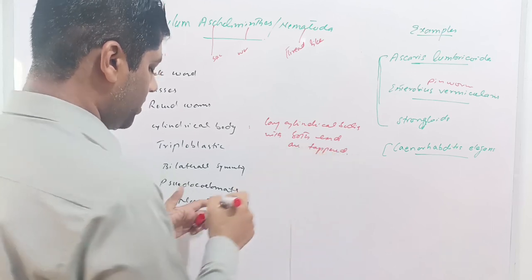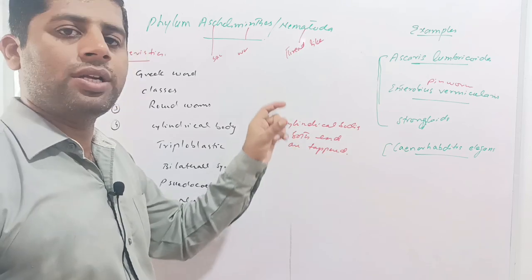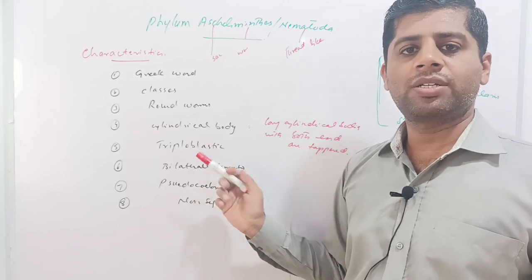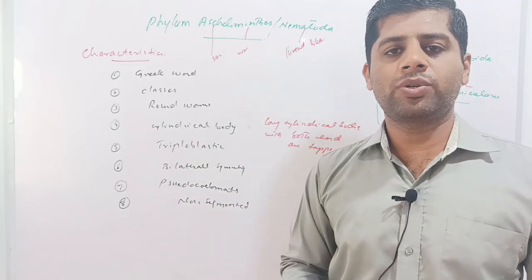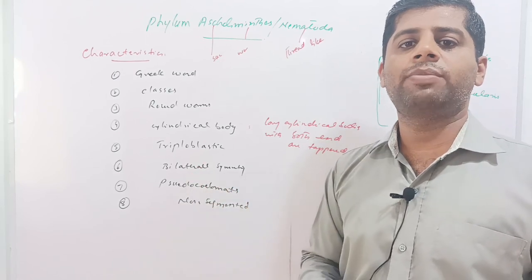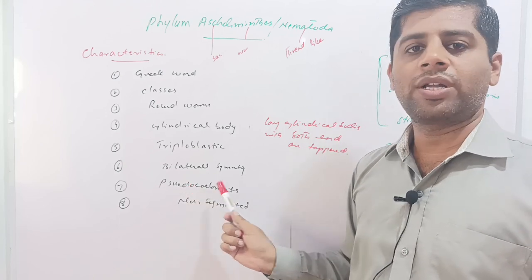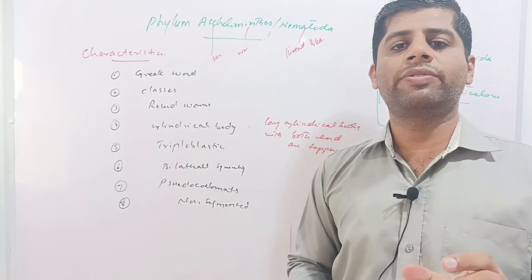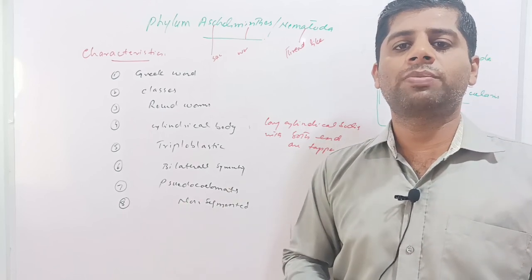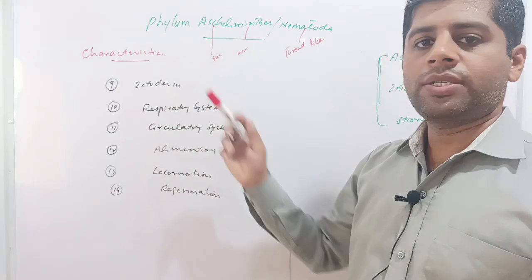As seen in the Ascaris and Enterobius vermicularis diagrams, the animals have cylindrical and elongated bodies with both ends tapered. These animals are triploblastic and have three body layers: ectoderm, mesoderm, and endoderm. They show bilateral symmetry and can be divided into two equal halves by an imaginary line. They are also called pseudocoelomates because the true body cavity or true coelom is absent. These are non-segmented, soft-bodied animals.